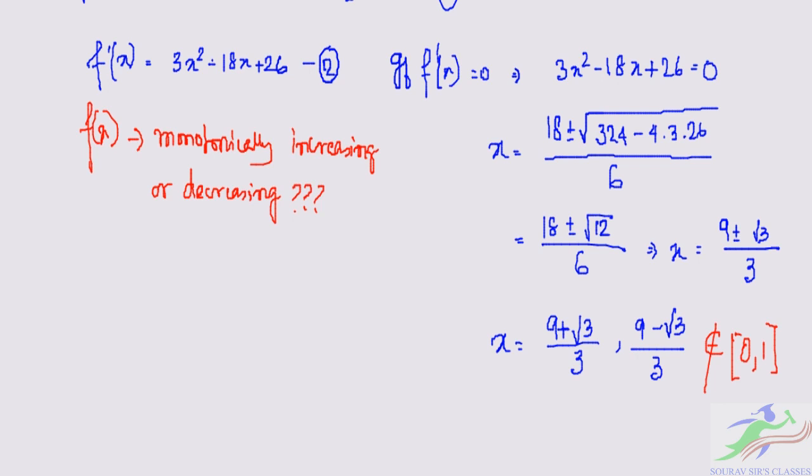Then we have f'(0)=0-0+26=26, which is greater than 0. And f'(1)=3-18+26=11, which is also greater than 0.